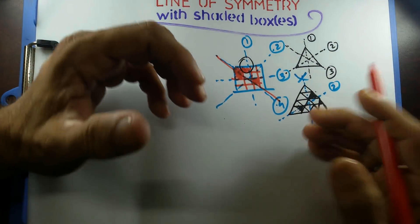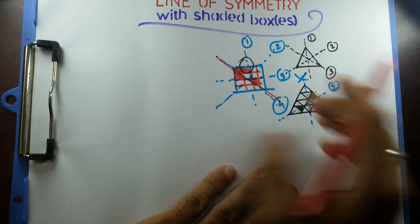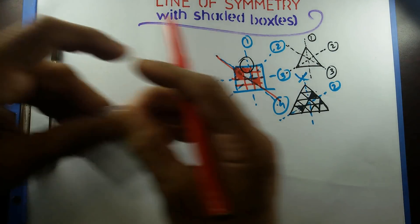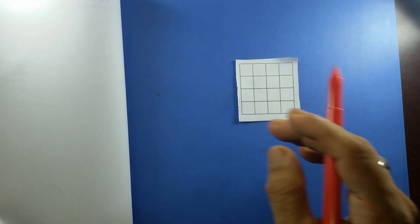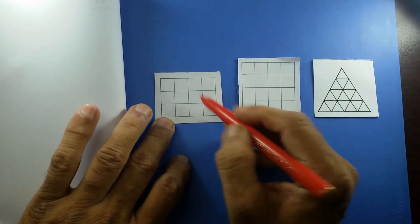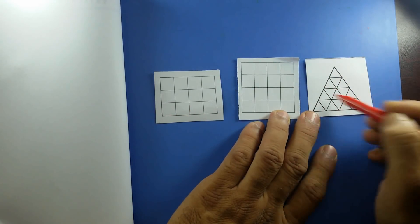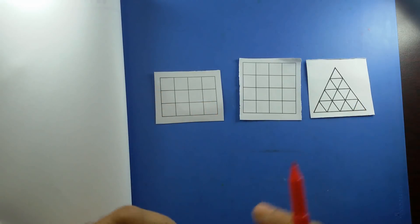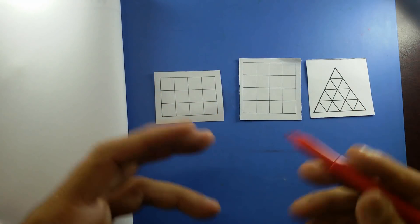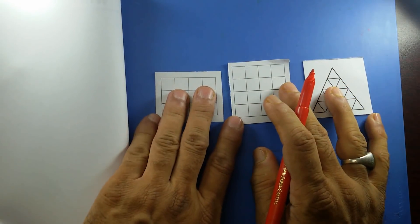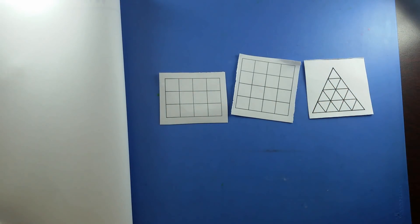My suggestion would be to check the previous question papers. If you find any question like that, go ahead and practice. You can just make square boxes and play around to find the line of symmetry by shading some of the boxes — try that. Hopefully it will be easier for you. If you don't understand anything, please leave a comment. I'll get back to you as soon as possible. Take care, have a good day.